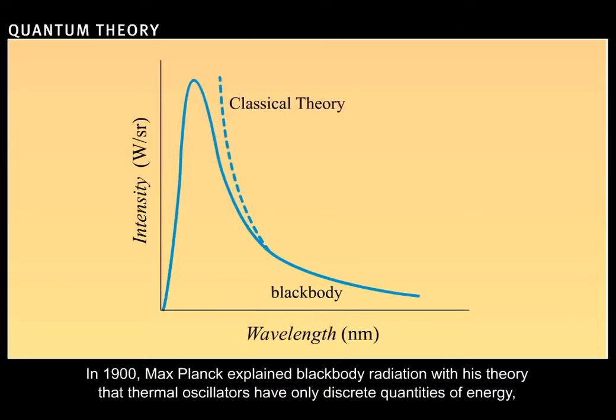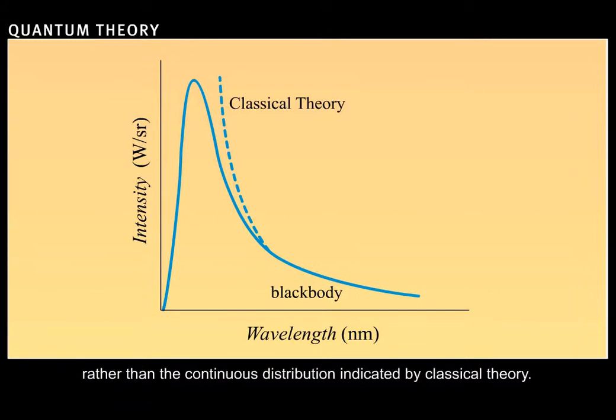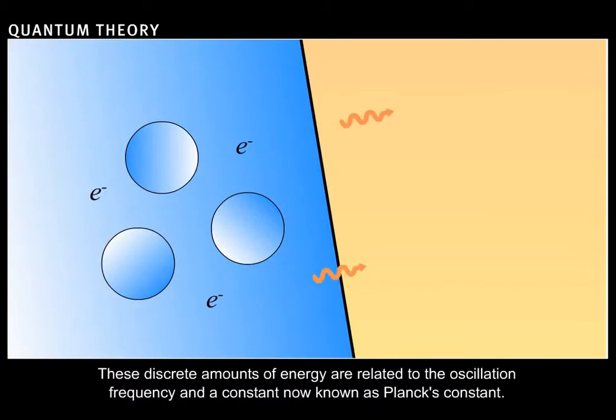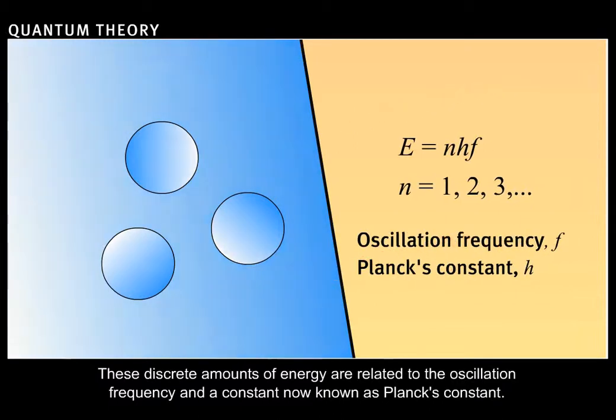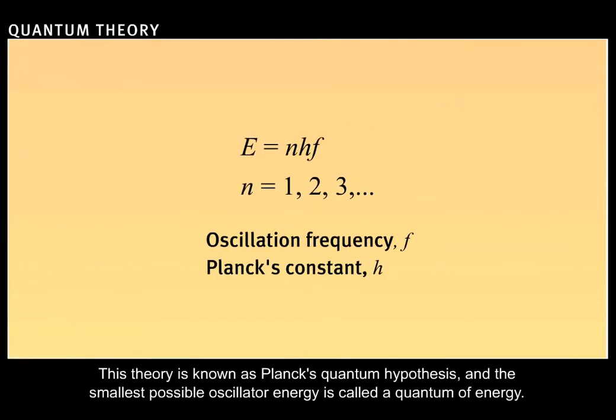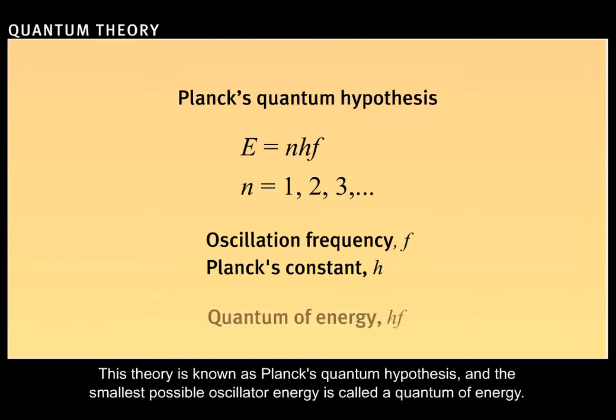In 1900, Max Planck explained black body radiation with his theory that thermal oscillators have only discrete quantities of energy, rather than the continuous distribution indicated by classical theory. These discrete amounts of energy are related to the oscillation frequency and a constant now known as Planck's constant. This theory is known as Planck's quantum hypothesis, and the smallest possible oscillator energy is called a quantum of energy.